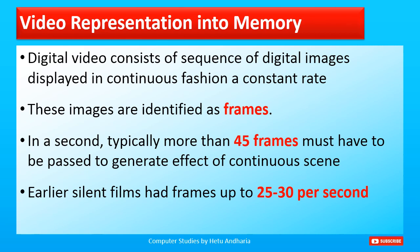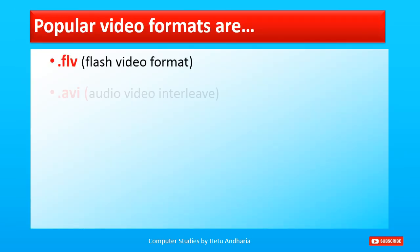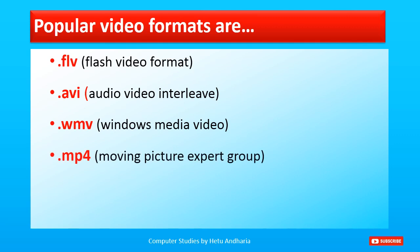It's worth knowing that earlier silent films had frame rates of 25 to 30 frames per second. That is why when you watch old movies they are not as smooth as present-day movies — there are breaks in between and the motion is not perfectly smooth. Popular video formats are .flv, .avi, .wmv, and .mp4.